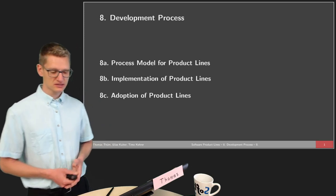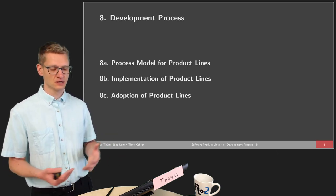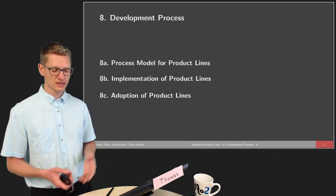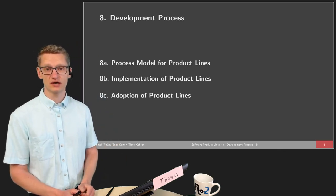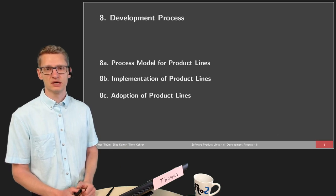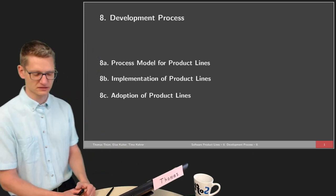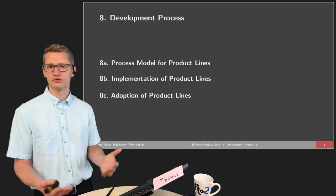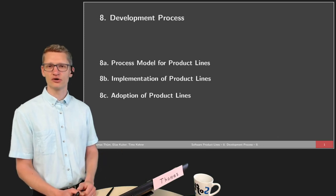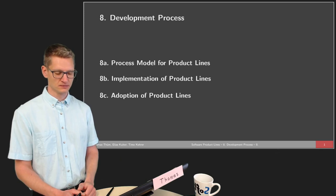We will also see that there are further steps needed, for instance quality assurance, and we will come to those in later lectures in more detail. This lecture is divided into three parts. First, we will talk about a process model for product lines — a very generic process model that gives you an understanding of the main ingredients to product line development. In the second part we will give an overview and summary of implementation techniques covered so far and compare them in more detail. In the third part we will look at adoption strategies — how do you start introducing a product line in a company?